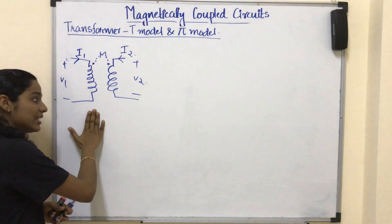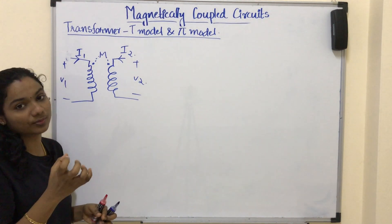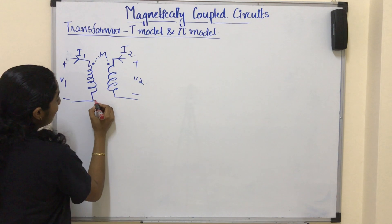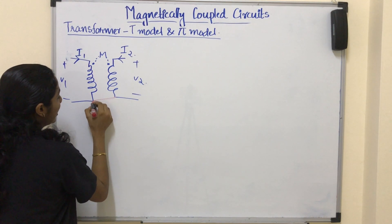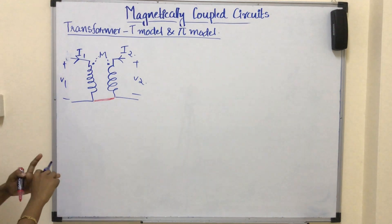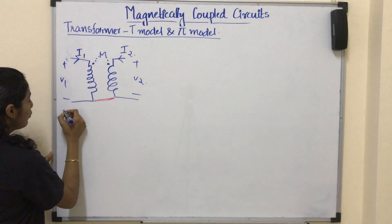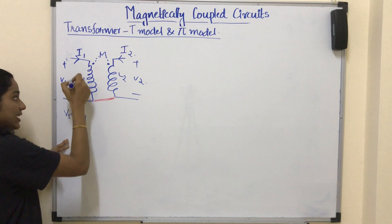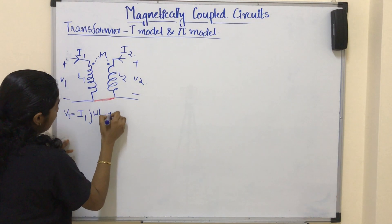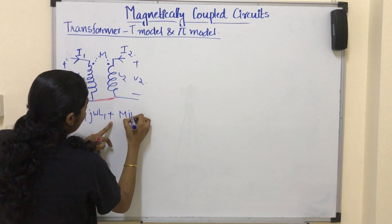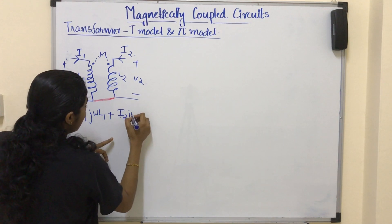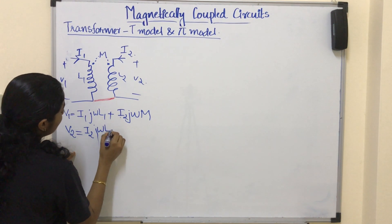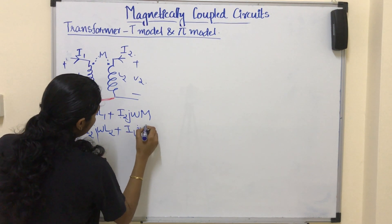For the equivalent circuit we need to make some assumptions. We assume a common ground for L1 and L2. Considering this common ground, V1 is equal to I1 times jωL1 plus jωM times I2, and similarly V2 involves jωM times I1 plus jωL2 times I2.